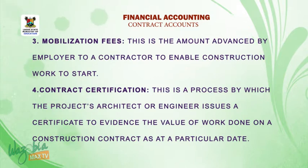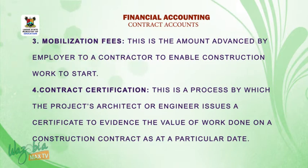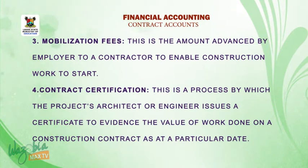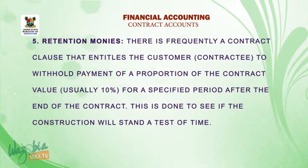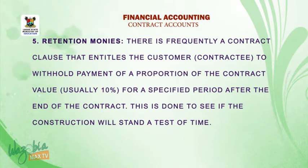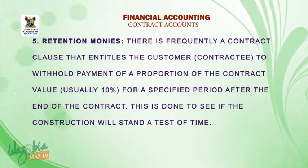Contract certification: this is a process by which the project architect or engineer issues a certificate to evidence the value of work done on a construction contract as at a particular date. Retention monies: there is frequently a contract clause that entitles the customer to withhold payment of a portion of the contract value, usually 10%, for a specified period after the end of the contract. This is done to see the construction withstand a test of time.